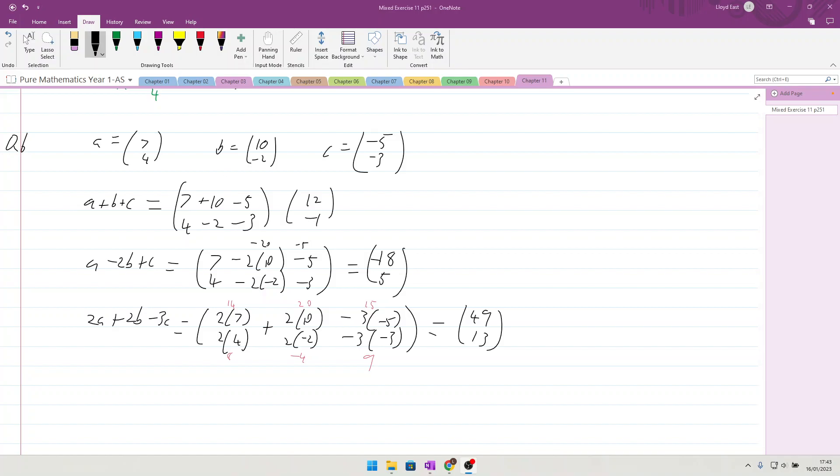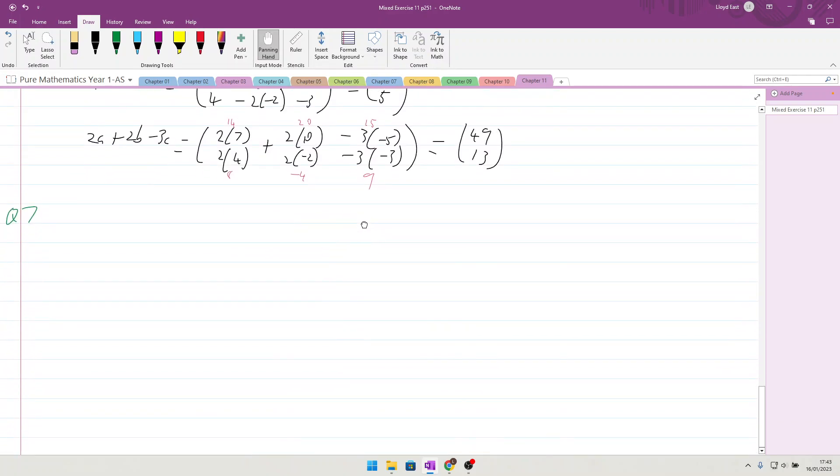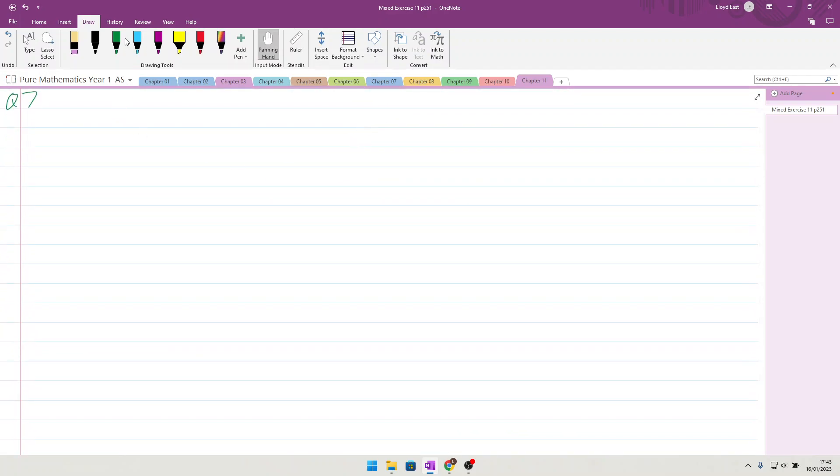Okay then, question 7 of this vectors chapter 11 mixed exercise. We have some sort of triangle. We've been told that AB is 3i plus 5j and AC is 6i plus 3j. Find BC.